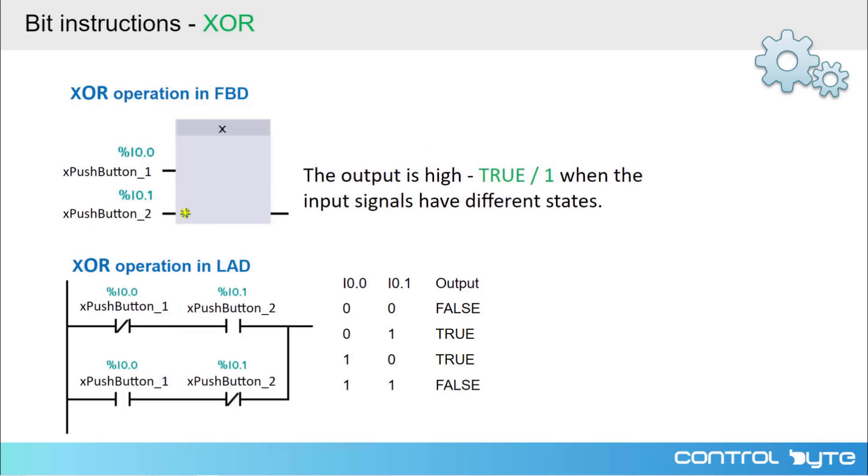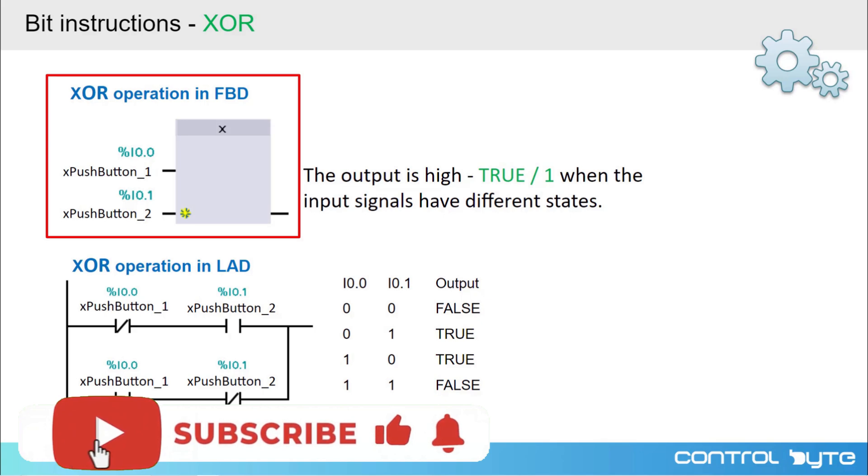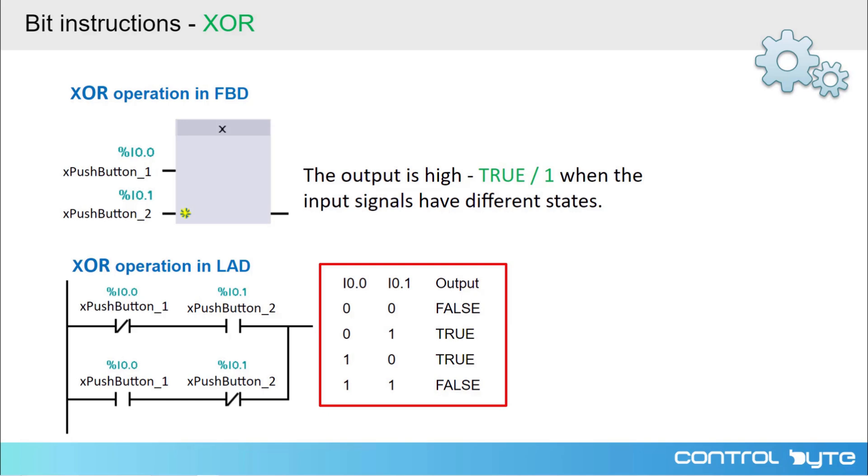The next bit logic operation is the XOR instruction. This is an instruction that in LAD language has the following form. Here we use both NO and NC contacts to generate the desired result. What does this instruction look like in FBD? It is a block with an X mark. Let's look for the logic of this instruction. The instruction returns a logical zero if the input has two logical zeros or two logical ones.